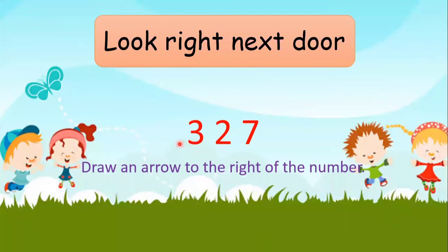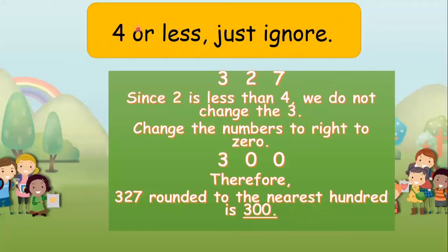Look right next door — draw an arrow to the right of the number. The right of number three is number two. Since two is less than four, just ignore — we do not change three. We will change the numbers to the right to zero: three, zero, zero. Therefore, 327 rounded to the nearest hundred is 300.